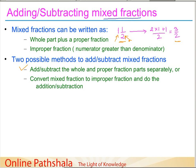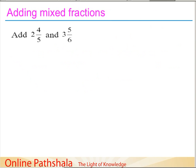In the second method, we convert the mixed fractions into improper fractions, and then simply do the addition and subtraction using the rules for like and unlike fractions. Let us solve some examples to make these methods clear.